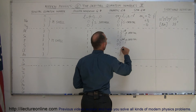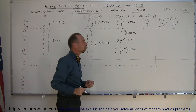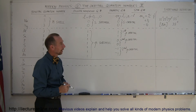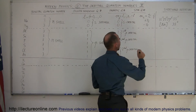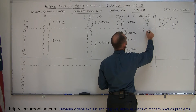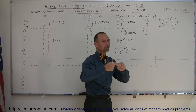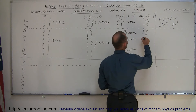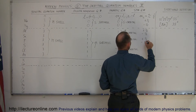In each P-orbital we can have two electrons, so spin values will be +½ and -½. Notice that in each orbital the electrons have opposite spin directions, so they can coexist in the same orbital.